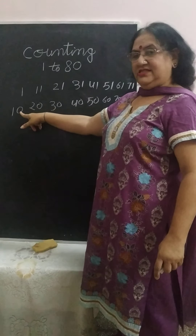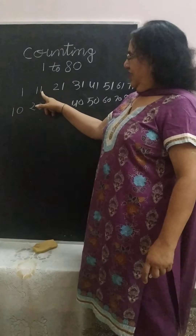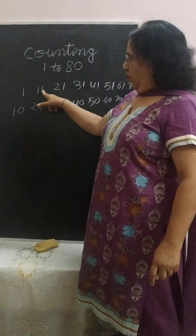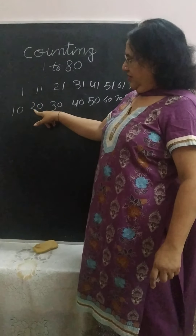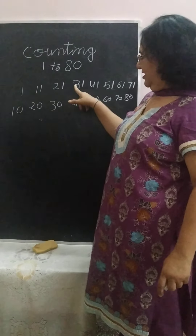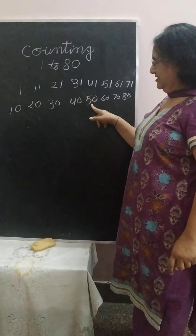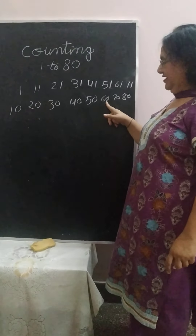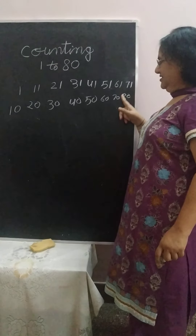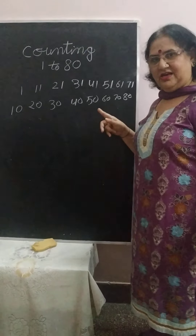1 ki niche come 10. 11 ki niche — 20. 21 ki niche — 30. 31 ki niche — 40. 41 ki niche — 50. 51 ki niche — 60. 61 ki niche — 70. 71 ki niche — 80.